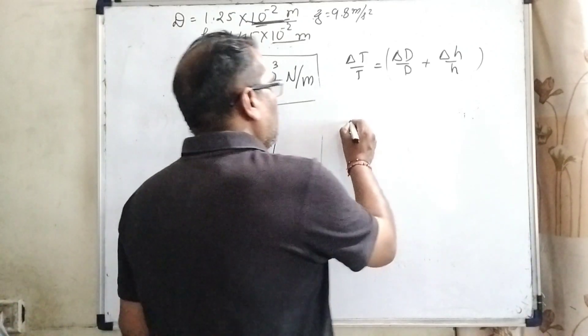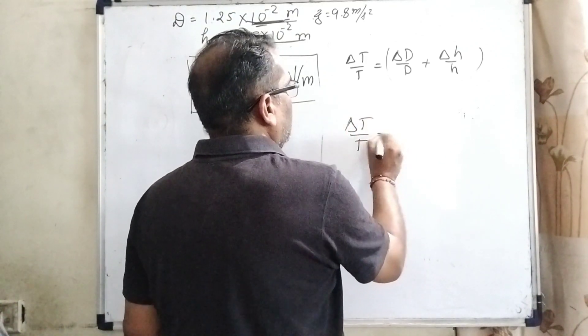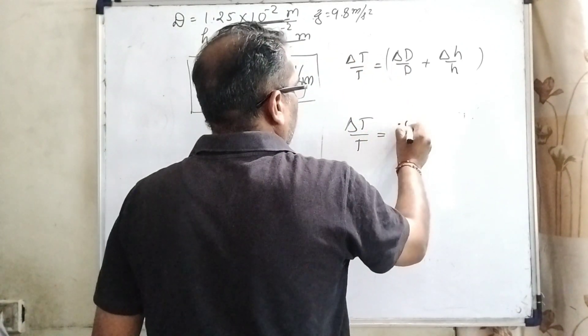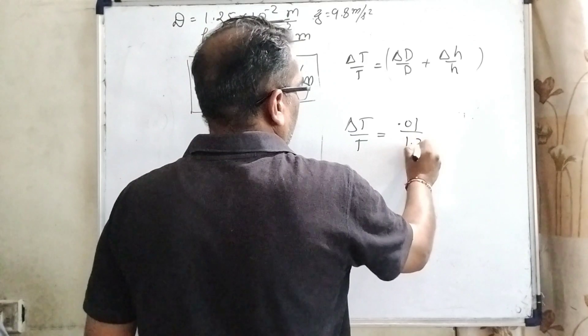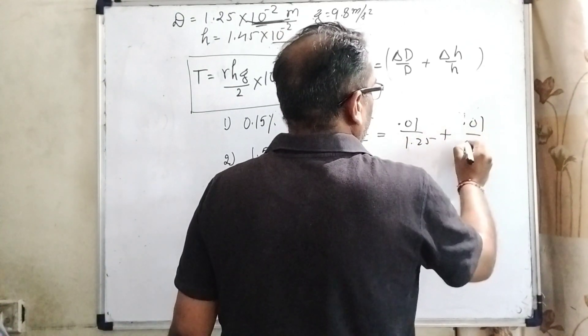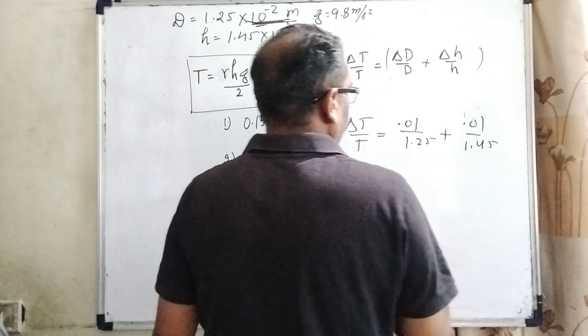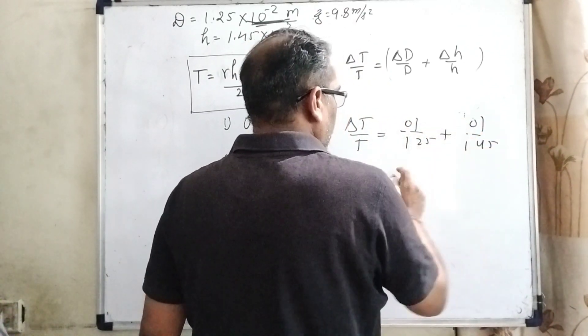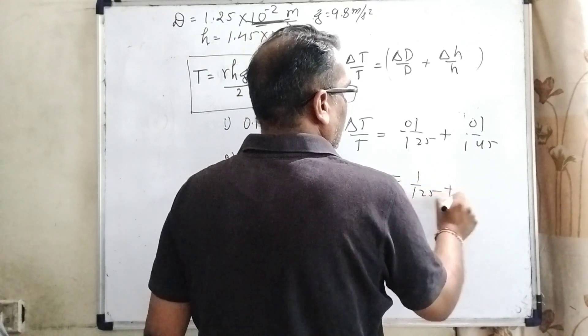Now, substitute the value, delta T by T equal to, what is the error? Here, error is 0.01 and the value is 1.25. And similarly here, the error is 0.01 and 1.45. Then, decimals can be removed. Now it becomes 1 by 125 plus 1 by 145.